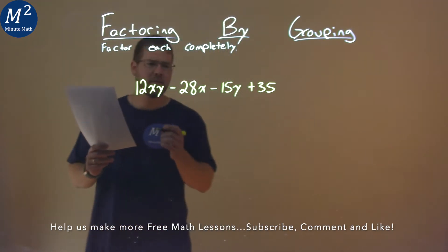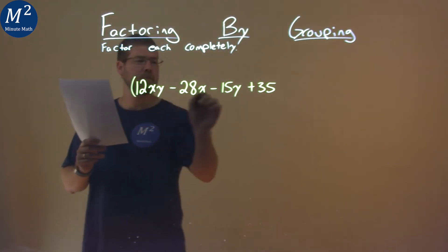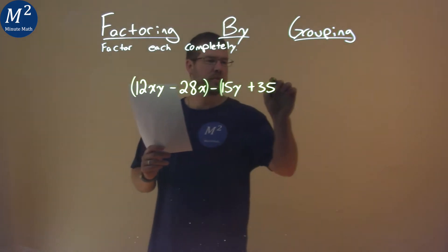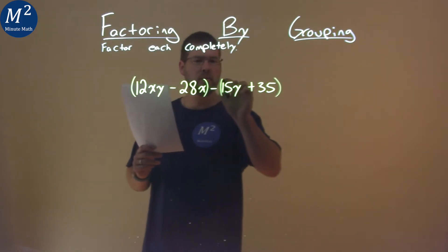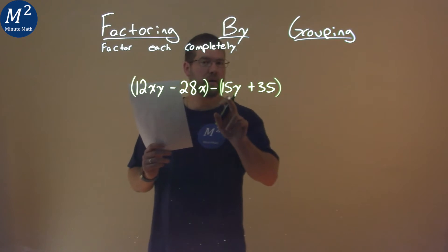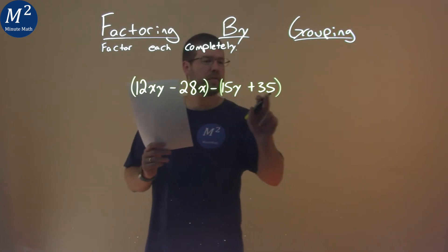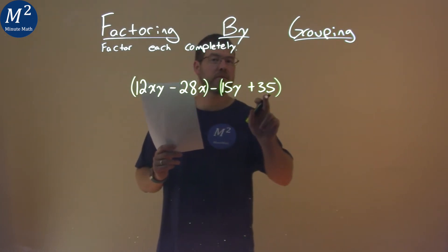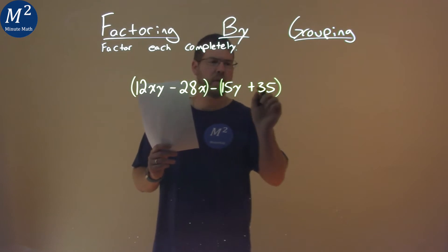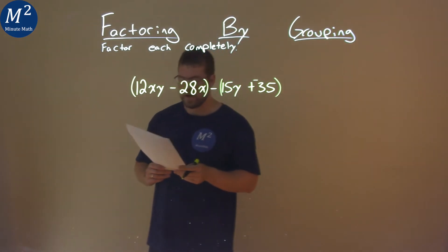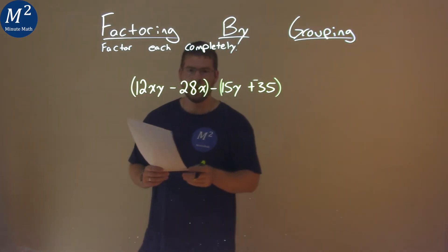What I first like to do is put some groups here — the first two terms in a group, and the second two terms in a group. But this is tricky. That minus sign was just to the 15y. By putting parentheses here, that minus sign has to distribute to the 35, but we want that to stay positive. So we counteract that negative that's going to be distributed and put a minus sign over the 35. Now we're good.